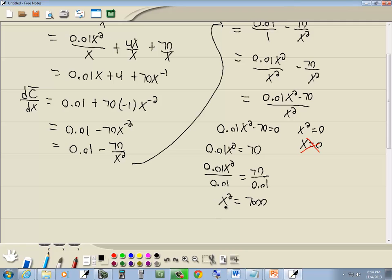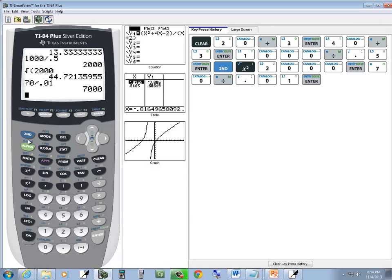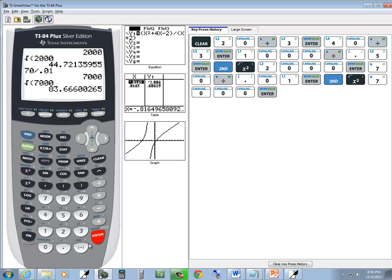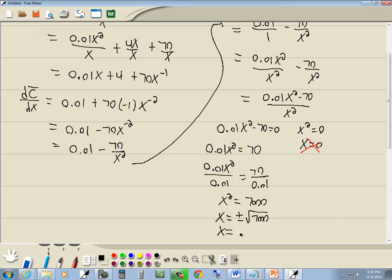Then the square root property says if you've got something squared equal to something else, you drop your squared and you put a plus or minus square root around the other side. Now the negative will drop because we don't want negative units. But let's see what square root of 7,000 gives us. So second x squared, 7,000, enter. Now we'll round it like normal. 83.6 rounds to 84, so we've got 84 units.